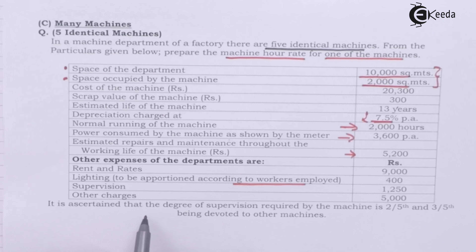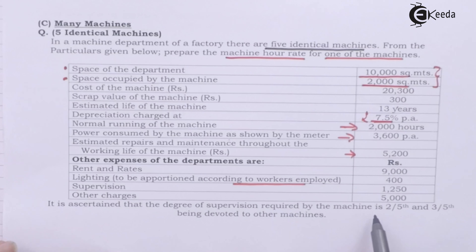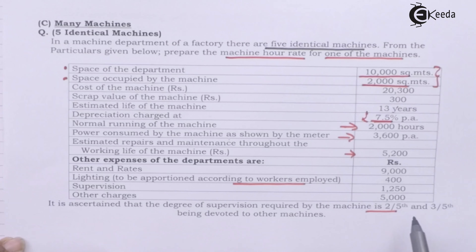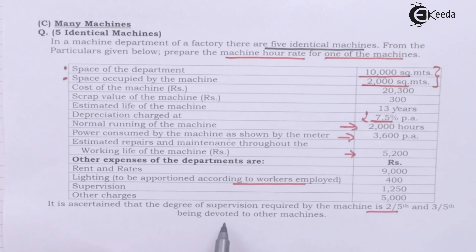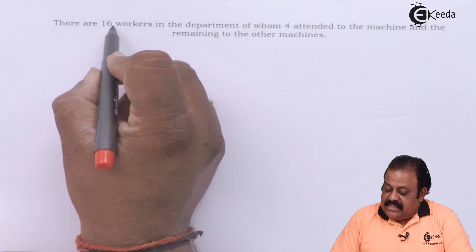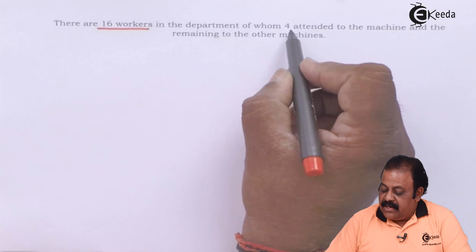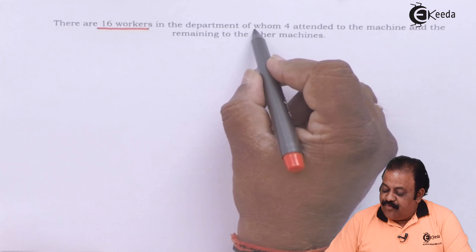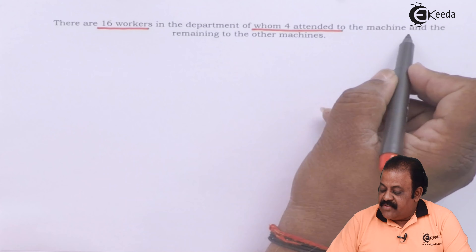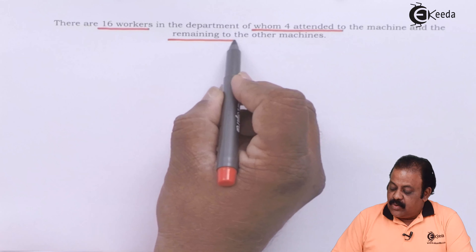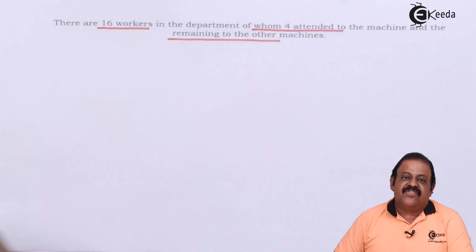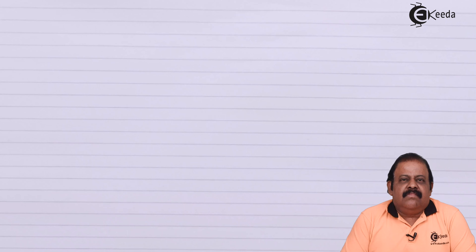It is ascertained that the degree of supervision required by the machine is two-fifths, and three-fifths being devoted to other machines. There are 16 workers in the department, of whom four attended to the machine and the remaining to other machines. Now we will prepare a format.